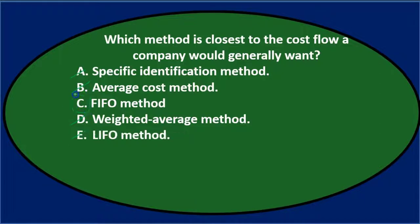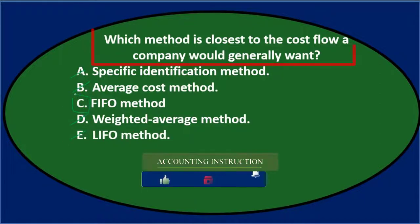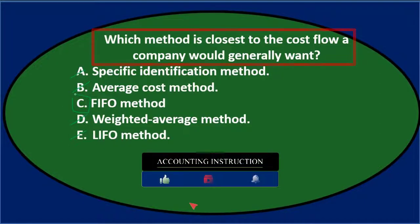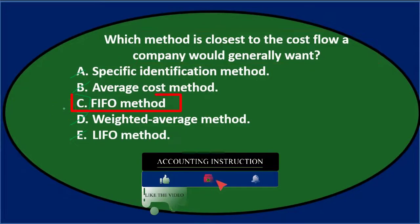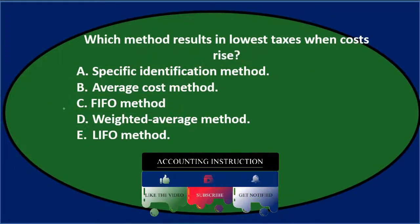Which method is closest to the cost flow a company would generally want? C. First in, first out. Next question.